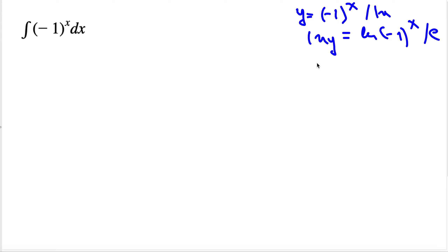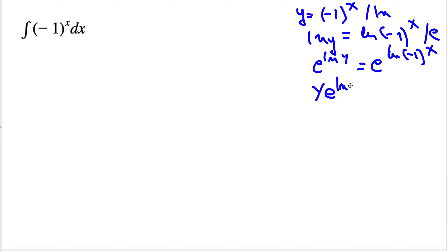Now if we exponentiate both sides, e^(ln(y)) is going to be equal to e^(ln((-1)^x)). By using the properties of natural logs, the exponent x can come to the front, and similarly y comes to the front on the left side. So y is going to be e^(ln) equal to e^(x·ln(-1)). And since e^(ln) is 1, we can write y is equal to e^(x·ln(-1)).